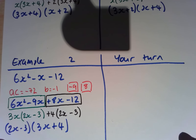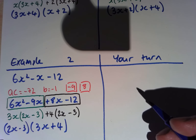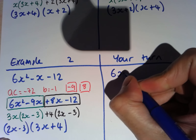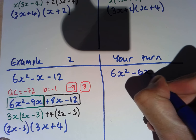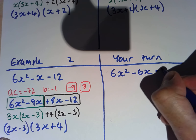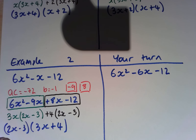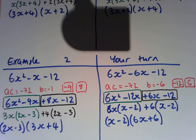I want you to have a go at this question: 6x squared, take away 6x, take away 12. Pause the video and have a go. That's what you should have as your answer. I hope you found that useful. Thanks very much for joining me — I'll see you next time.